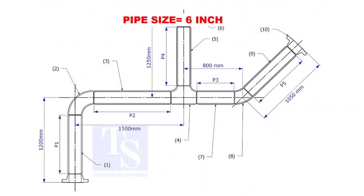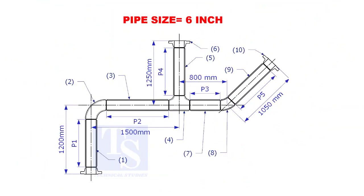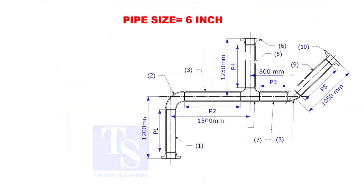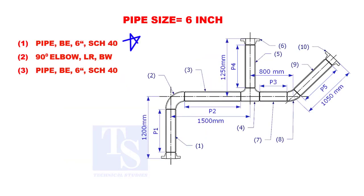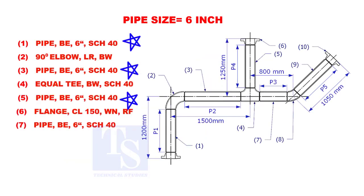Assume that the pipe size is 6 inches. Item numbers 1, 3, 5, 7, and 9 are pipes.